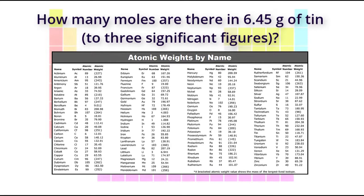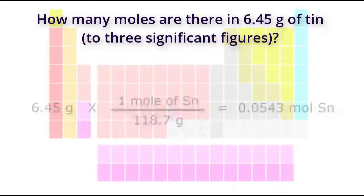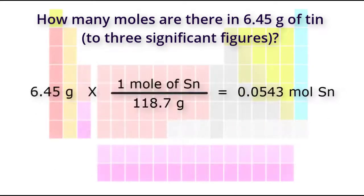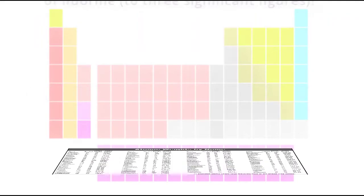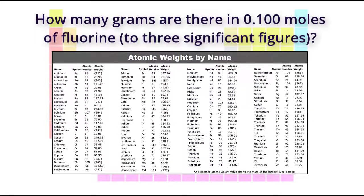Try this one next: how many moles are there in 6.45 grams of tin, to three significant figures? Pause the video here and play it once you think you know the answer. There are 0.0543 moles of tin in 6.45 grams of tin.